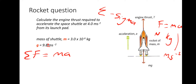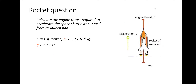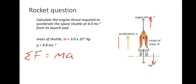The best way to show this is just to do an example. So let's go with: the sum of the forces is equal to ma. The sum of the forces — we've got the engine thrust going upwards, we've got the weight acting down, and the acceleration is obviously going to be up. So I'm going to take up as positive in this scenario.